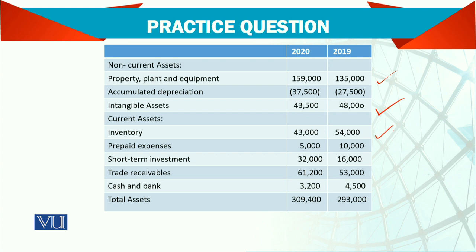Current assets include inventory, prepaid expenses, and short-term investments. Short-term investments are part of cash and cash equivalents. If they are long-term, then they are an investing activity, but if they are short-term, then we also have trade receivables and cash and bank balance.